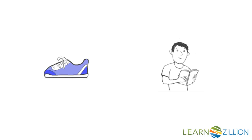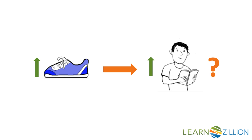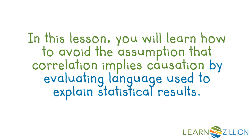If shoe size is correlated with reading levels for elementary school children, can we say that foot growth causes improvements in reading ability? In this lesson, you will learn how to avoid the assumption that correlation implies causation by evaluating language used to explain statistical results.